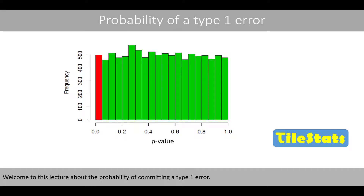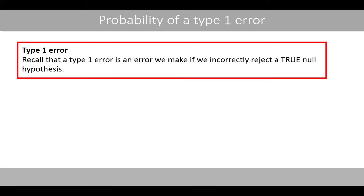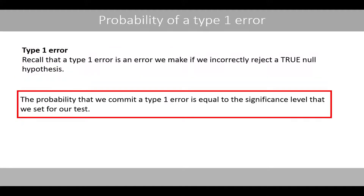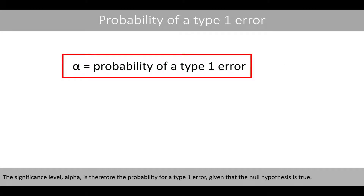Welcome to this lecture about the probability of committing a type 1 error. Recall that the type 1 error is an error we make if we incorrectly reject a true null hypothesis. The probability that we commit a type 1 error is equal to the significance level that we set for our test. The significance level, alpha, is therefore the probability for a type 1 error given that the null hypothesis is true.